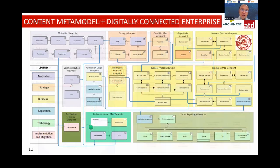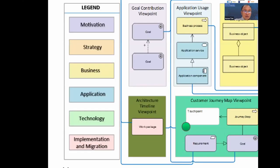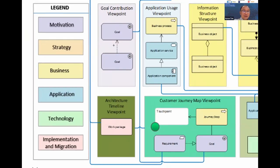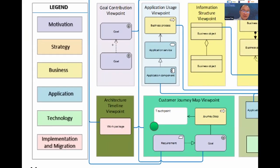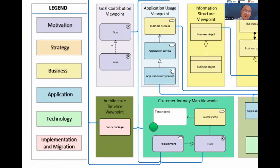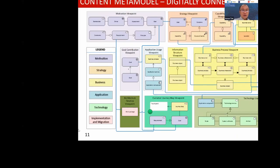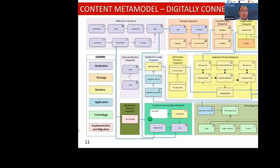This is an example of the content meta model — the first thing a bank needs to have. They need to define their structure — their digital enterprise itself. Once we have this, we can quickly generate a digital twin of the particular bank. The legend on the left shows motivation, strategy, business, application, technology, and implementation and migration — these are the layers in the enterprise.